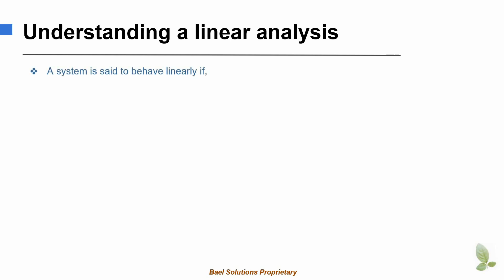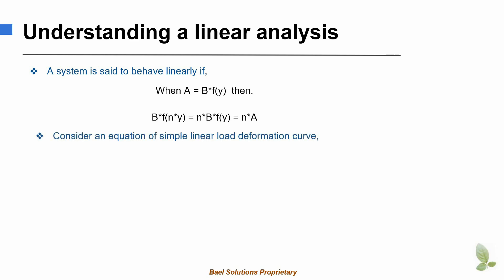A system is said to behave linearly when it meets the following condition. Assume that a is equal to b multiplied by a function of y. If we multiply y by some constant n, then b times a function of n times y should be equal to n times b multiplied by the function of y, and this should be equal to n times a. Thus, if we scale y by some constant n, a is also scaled by the same constant n.